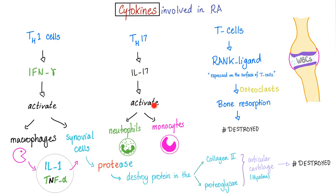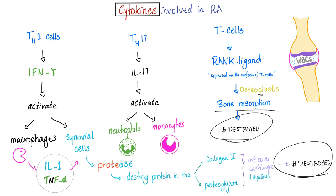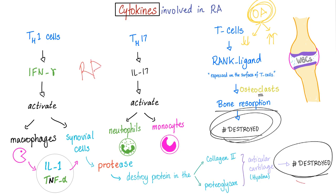TH17 produces interleukin-17, which activates neutrophils, monocytes, and T cells. The RANK ligand, expressed on T cell surfaces, activates osteoclasts — osteoclasts resorb bone. So both cartilage and bone are destroyed in rheumatoid arthritis. Contrast this with osteoarthritis, where cartilage is destroyed but bone actually grows, forming osteophytes.